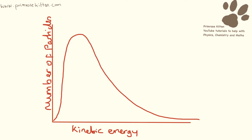Now, this is the really complicated part, and this is an A-level standard graph, not something that I normally show to GCSE students. Along the bottom we have kinetic energy, and up the side we have number of particles. And if we say that here is the amount of energy that you need to escape, so at this temperature, this is going to be the number of particles that escape.